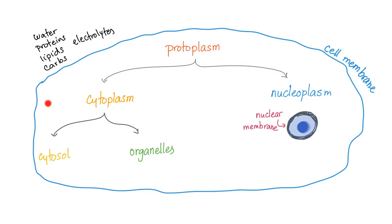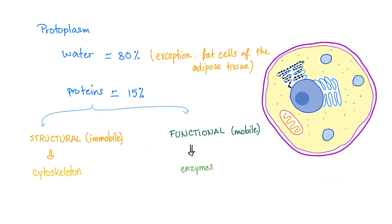And this is, of course, the cell membrane. 80% of the protoplasm is water — except in fat cells of the adipose tissue, because fat and water do not mix, so do not expect to find water inside of these fat cells.